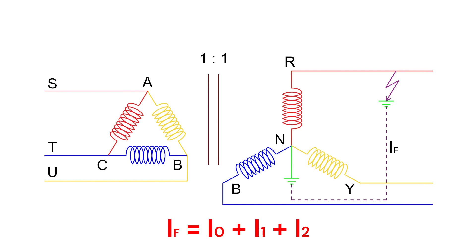However, the zero-sequence current I0 flows only on the earthed star side of the transformer and does not appear on the delta side. Instead, it circulates within the delta winding. This means that the line currents on the delta side do not contain any zero-sequence current. This creates an imbalance in the differential current, which may cause the differential relay to trip even in a through-fault condition.